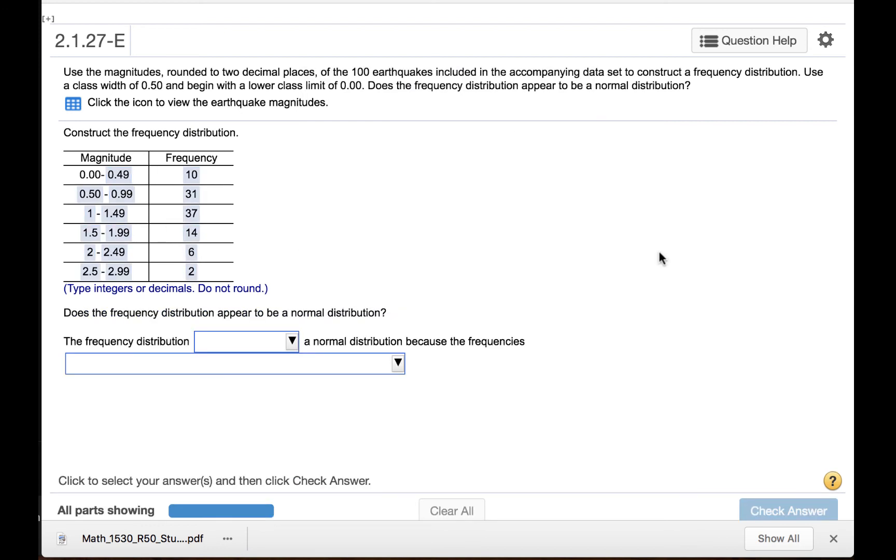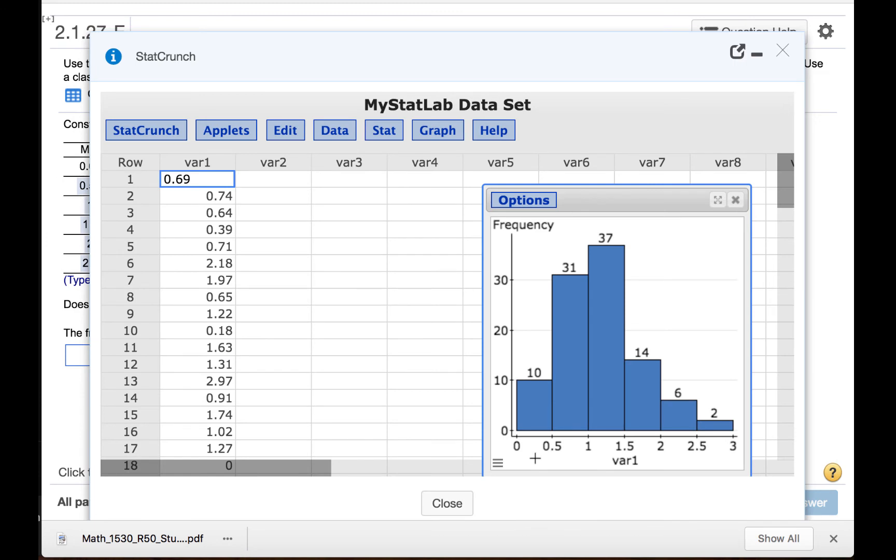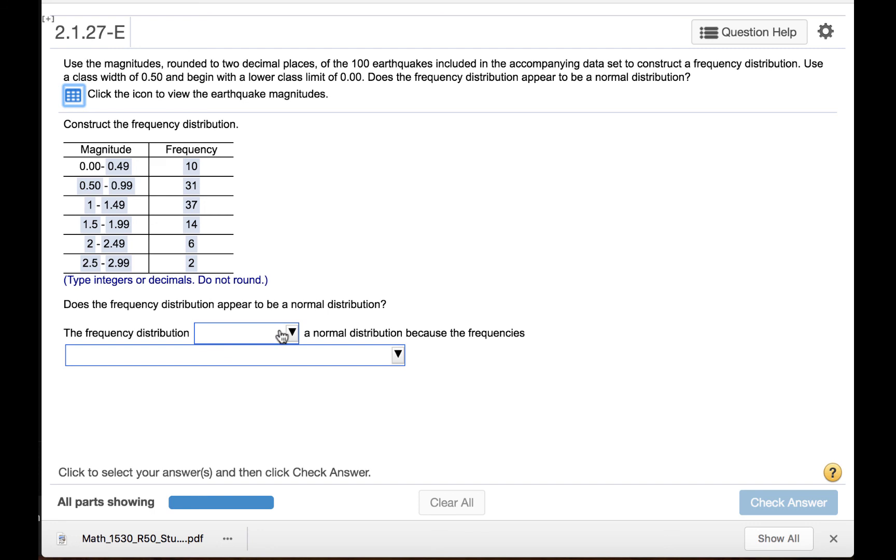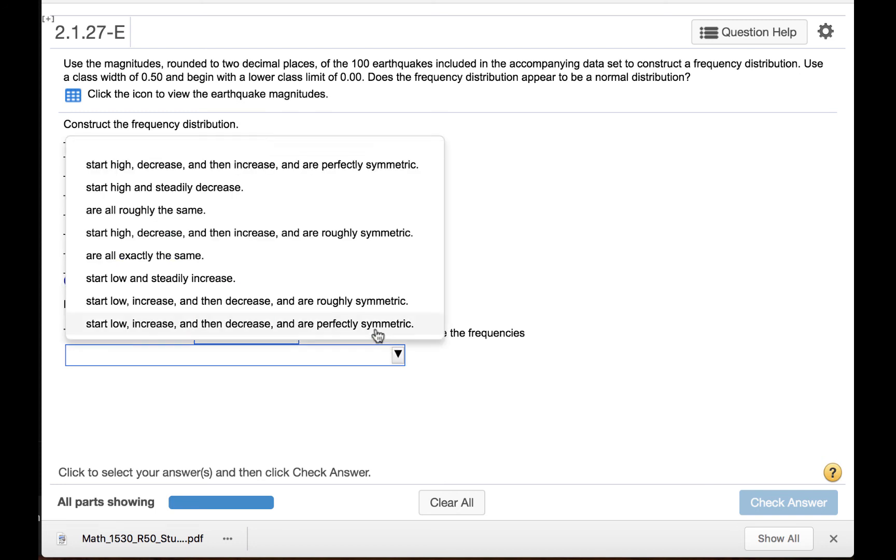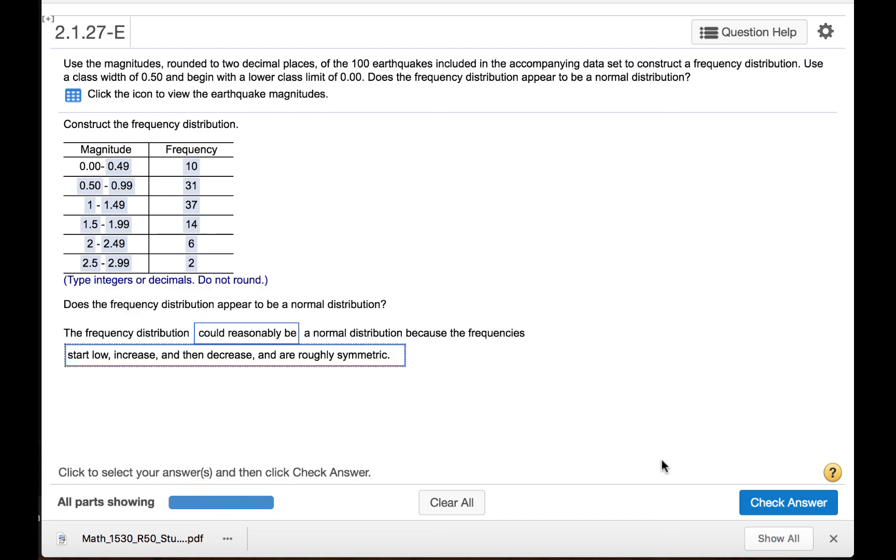Does the frequency distribution appear to be a normal distribution? We can see that this frequency distribution appears to be roughly mound shaped. The frequencies start low, increase, and then decrease again. They are roughly symmetric, but not perfectly symmetric. So we might say that the frequency distribution could reasonably be a normal distribution because the frequencies start low, then increase, and are roughly symmetric.